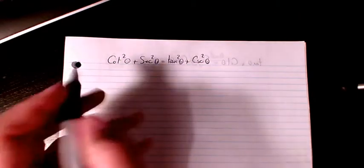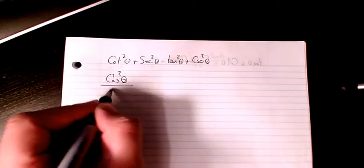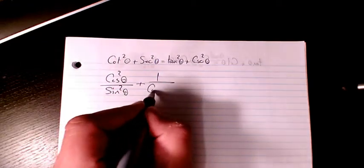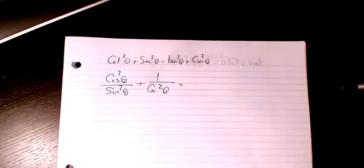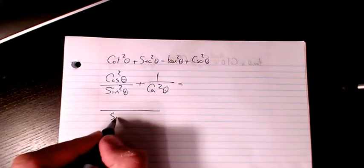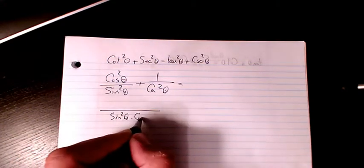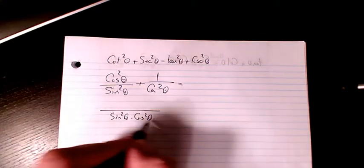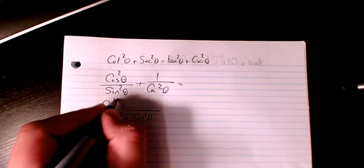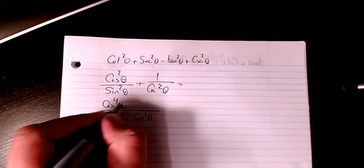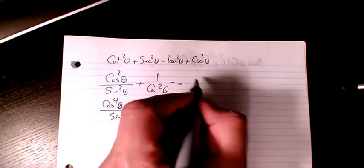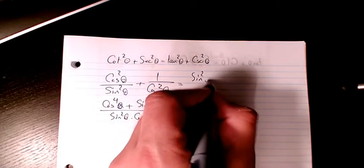So cotangent is cosine squared divided by sine squared, and secant is 1 over cosine squared theta. Finding the common denominator — sine squared theta times cosine squared theta — the numerator on the left-hand side becomes cosine to the power of 4 theta plus sine to the power of 2 theta.